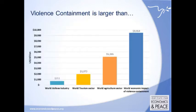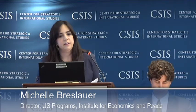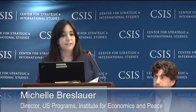This violence containment industry is actually bigger than the world tourism sector and bigger than the agricultural sector. Just a 1% reduction in this spending would fund the additional amount required to achieve the Millennium Development Goals — $60 billion per year. It's a really useful way to illustrate not only the social imperative but the economic imperative of peace. I'll now let Daniel give you more information about trends and the links between peace, resilience, and vulnerability.